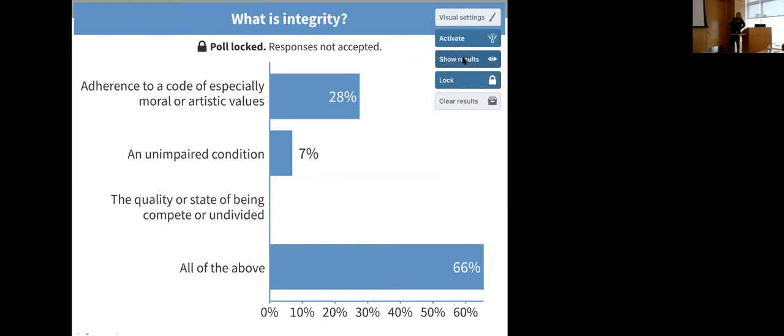Let's take a look and see where we are. So we'll lock the results and we'll show results. We have a somewhat of a split decision, but the majority has gone with all of the above. Given the split decision, if you go by the Merriam-Webster definition of what integrity is, all of the above is the correct answer.